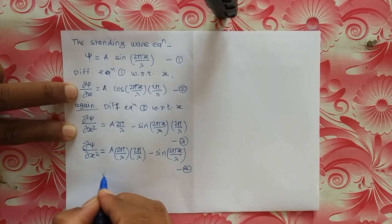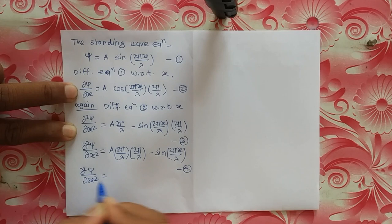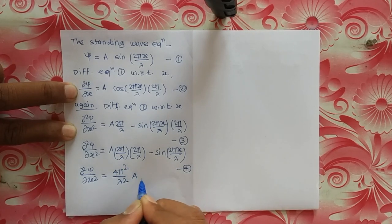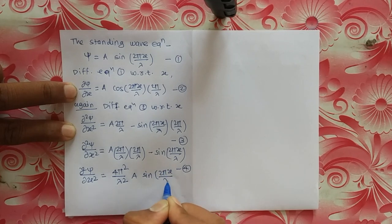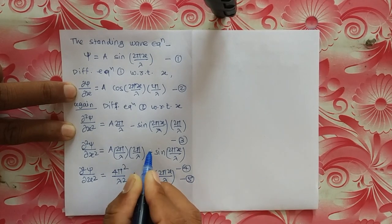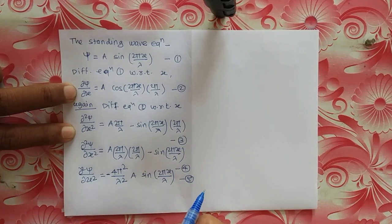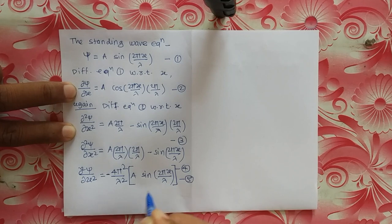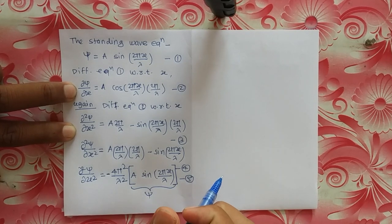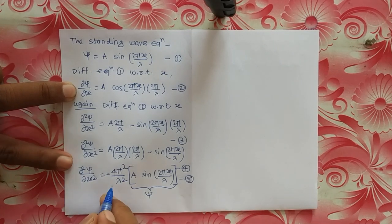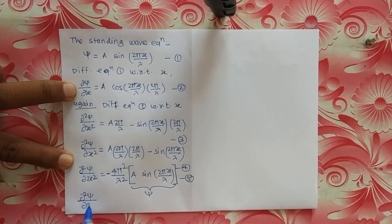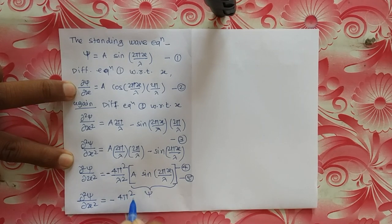Rearranging equation 4, d²psi/dx² equals minus (4π² / lambda²) times a sin(2πx / lambda). This is equation number 5. Now, observing that a sin(2πx / lambda) is the value of psi from equation number 1, we can replace that term with psi. Equation 5 then becomes d²psi/dx² equals minus (4π² / lambda²) times psi. This is equation number 6.